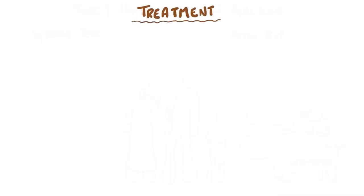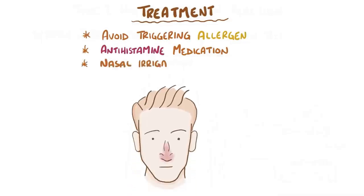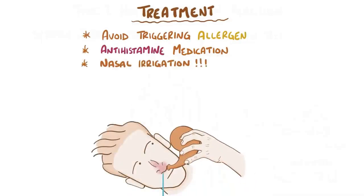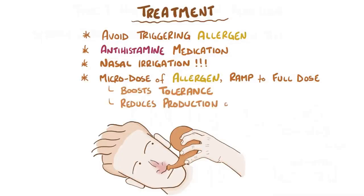Typically, the best thing for allergic rhinitis is to simply avoid the triggering allergen if possible. If there are symptoms, antihistamine medications can be used to suppress the effect of mast cell degranulation. Nasal irrigation can flush out the sinuses, which reduces the congestive symptoms of allergic rhinitis. In some situations, it's also possible to rewire the body's immune response to an allergen by exposing it to micro doses and slowly ramping up to a full dose of the allergen, which gradually boosts tolerance by reducing the immune system's tendency to produce IgE each time.